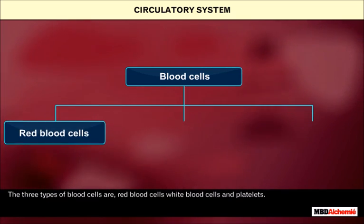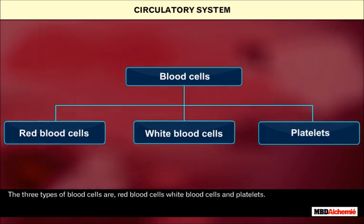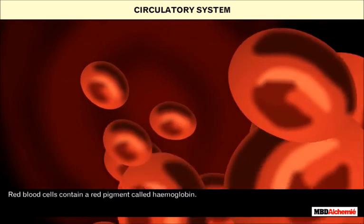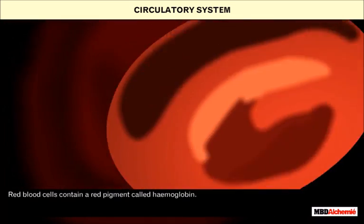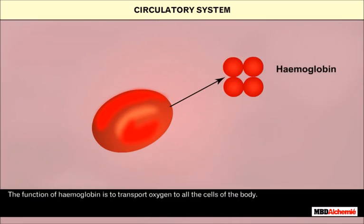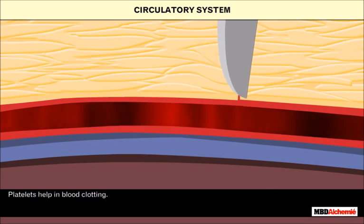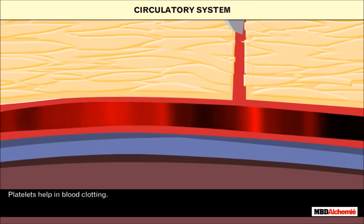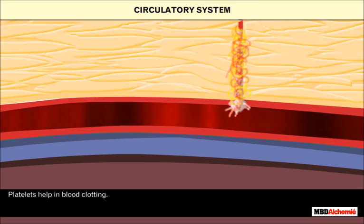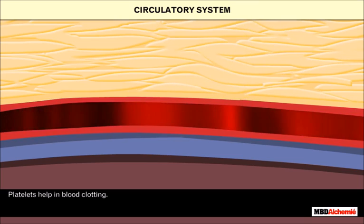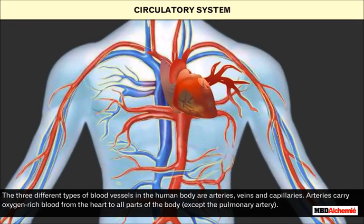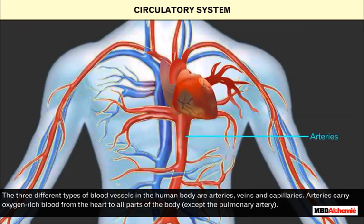Blood is composed of plasma and blood cells. The three types of blood cells are red blood cells, white blood cells, and platelets. Red blood cells contain a red pigment called hemoglobin, which transports oxygen to all the cells of the body. White blood cells fight against germs that enter our body. Platelets help in blood clotting.